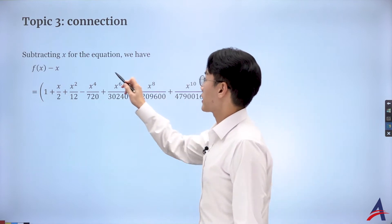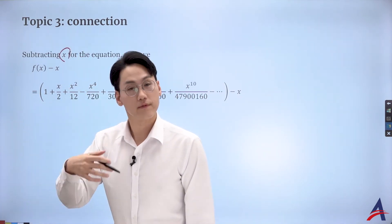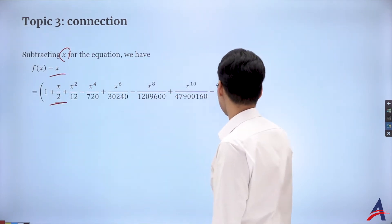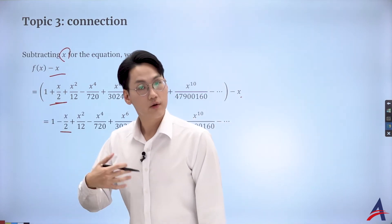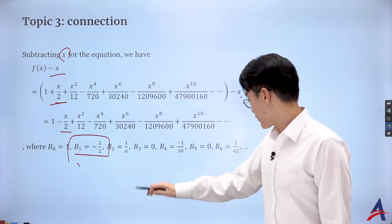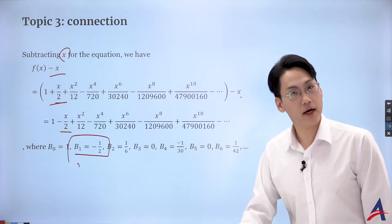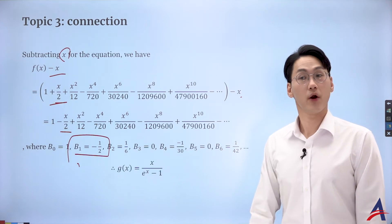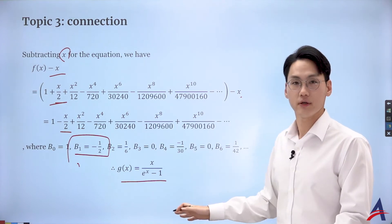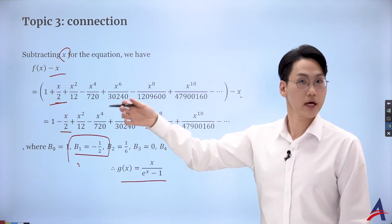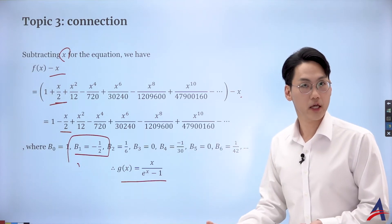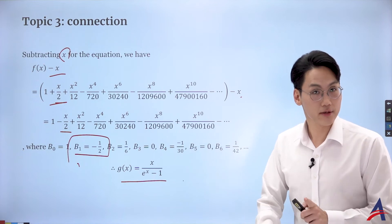So the premise is: we want b1 to be negative one-half. What I can do is: currently I have positive x over 2, giving b1 as positive one-half. But if I subtract x from the generating function, I get negative x over 2, which gives the desired b1 as negative one-half. So I need to redefine my generating function by subtracting x. Everything else remains the same — it's not a big deal, since sometimes b1 is defined as positive one-half and sometimes as negative one-half.